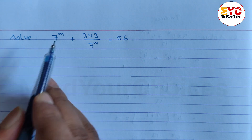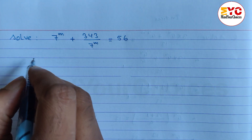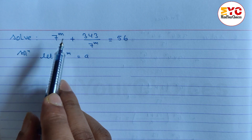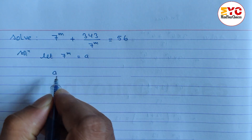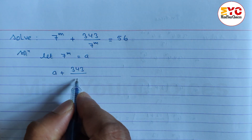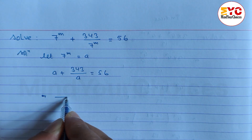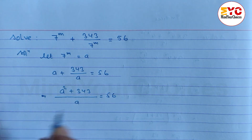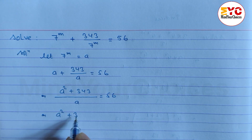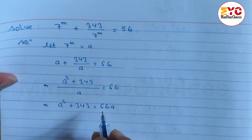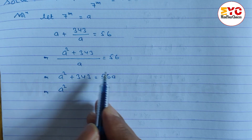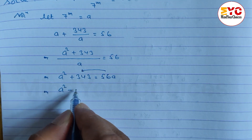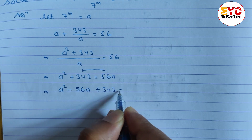Now solve: 7 power m plus 343 divided by 7 power m equals 56. Let 7 power m equal to a. Substituting a for 7 power m: a plus 343 divided by a equals 56. Take LCM: a squared plus 343 equals 56a, so a squared minus 56a plus 343 equals 0.